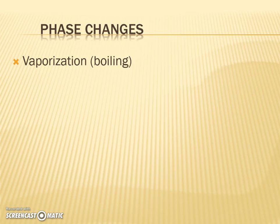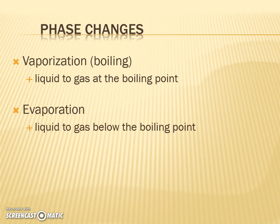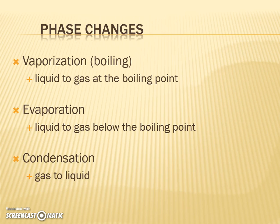Vaporization, or boiling, is where the liquid is heated up and gas molecules start to escape — going from a liquid to a gas at the boiling point. Evaporation is also where a liquid changes to gas, but at a temperature lower than the boiling point. For example, leaving a bowl of water out for several days causes it to evaporate at room temperature. Condensation is the opposite of evaporation — a gas goes to a liquid. Setting a cold pop out on a warm afternoon, water condenses along the sides of the can, just like in our distillation lab.